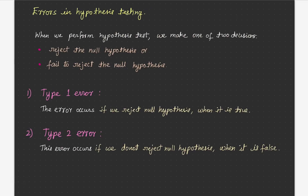When we perform a hypothesis test, we make one of two decisions: we reject the null hypothesis, or we fail to reject the null hypothesis. Because our decision is based on a sample rather than the entire population, there is a possibility we make one of the following errors. Type 1 error occurs if we reject the null hypothesis when it is true, and Type 2 error occurs if we do not reject the null hypothesis when it is false.